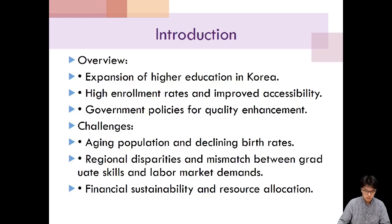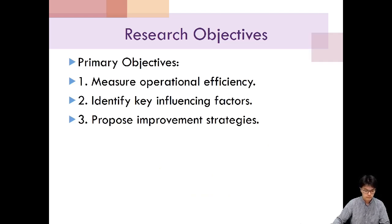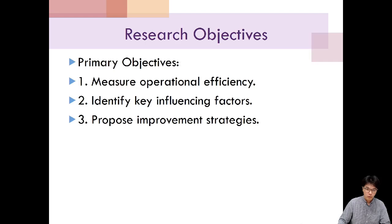This brings us to the primary objectives of this study. This study aims to achieve three primary objectives. First, we need to measure the current levels of operational efficiency among higher education institutions in South Korea. Second, we want to identify the key factors that influence this efficiency. Finally, we aim to propose strategies for improvement, focusing on optimizing resource use and aligning academic outputs with industry needs.